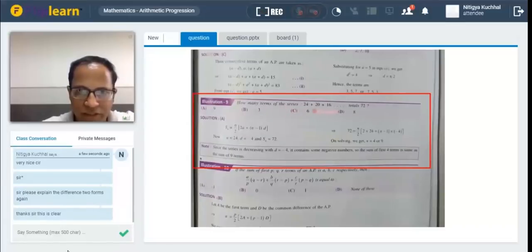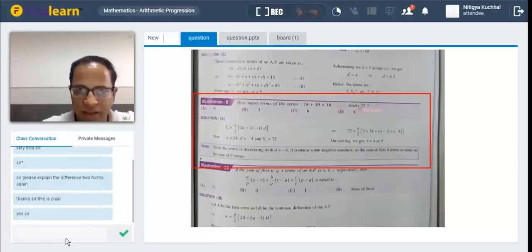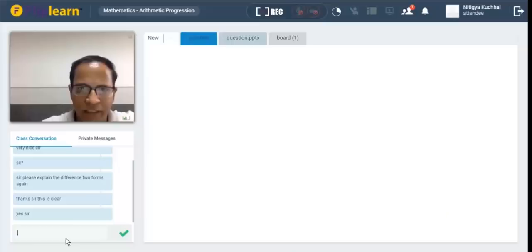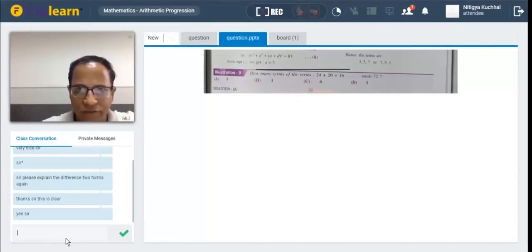How many terms of the series 24, 20, 16? Is it? Total 72. Okay. Let me take the question first. You can see that I have taken in the third slide, the third page, illustration 9. How many terms of the series 24, 20, 16? Total 72.